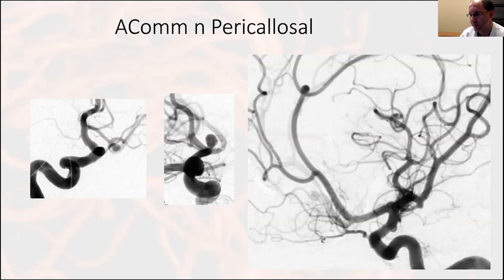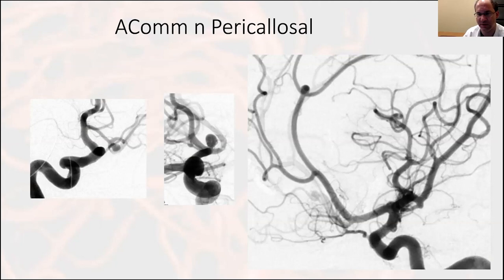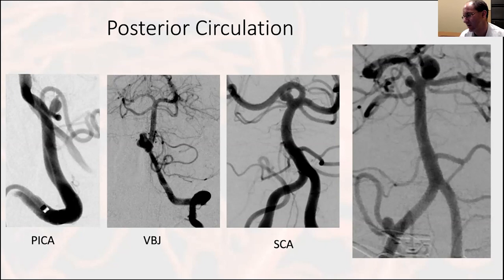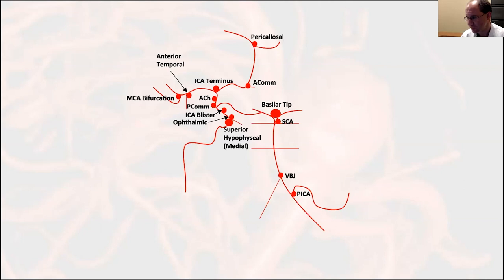For ACA aneurysms, the ACOM is a primary location, and pericallosal aneurysms — most commonly at the bifurcation of the ACA into pericallosal and callosomarginal branches — are sneaky high-risk aneurysms without great natural history data. For the posterior circulation, typical locations include PICA aneurysms, vertebrobasilar junction aneurysms, SCA aneurysms, and basilar tip aneurysms. A cartoon summarizes all these typical aneurysm locations together as a reference.